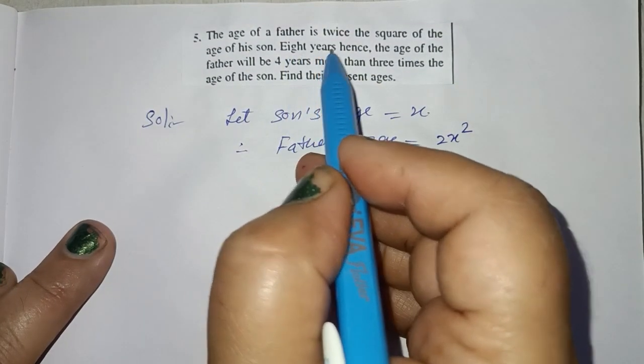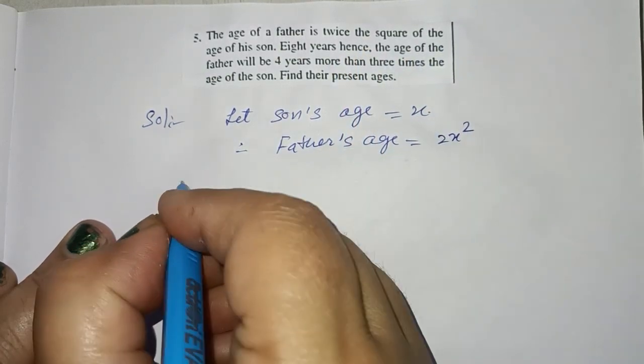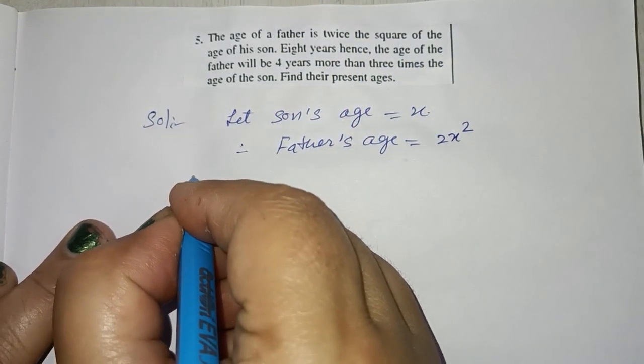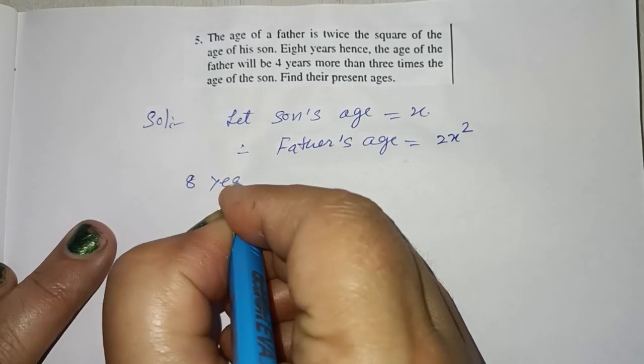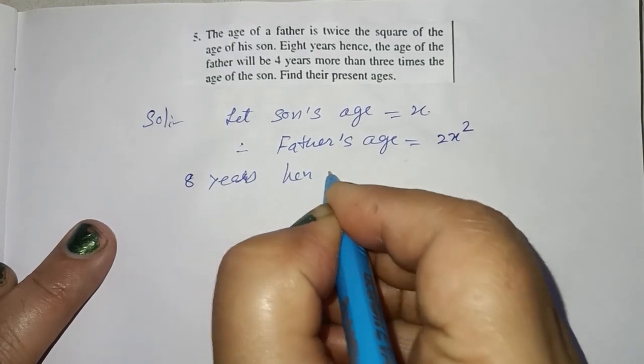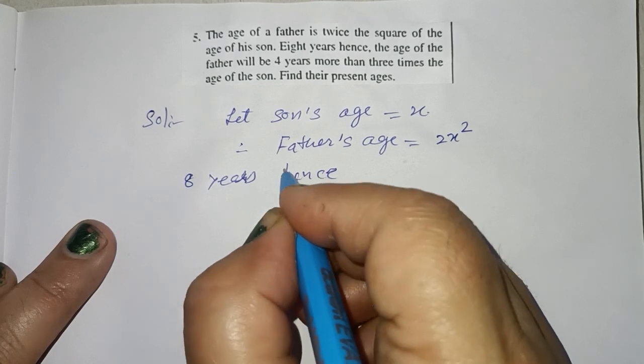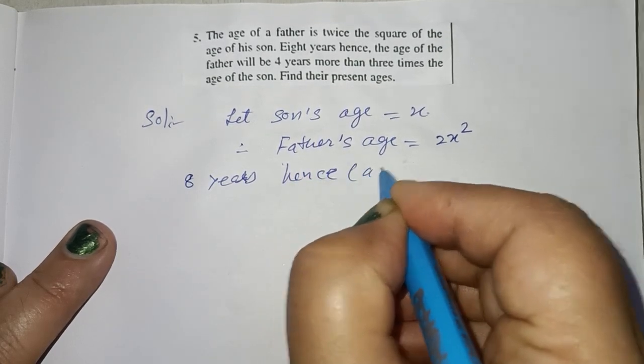8 years hence. Hence means after. 8 years hence. Hence, here in bracket, after.